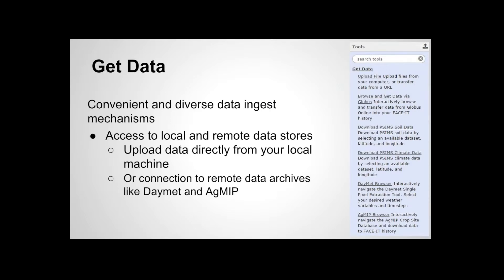One of the great features of FACI is a really diverse set of mechanisms for how you get data into the platform, into your histories, and into the tools you're using. FACI provides access to a really diverse number of both local and remote data stores. It also allows you to upload data directly from your local machine and store it in your history in the cloud and use it from there. It provides connections to remote data archives — the examples we'll show are DayMet and the AgMet data browser.